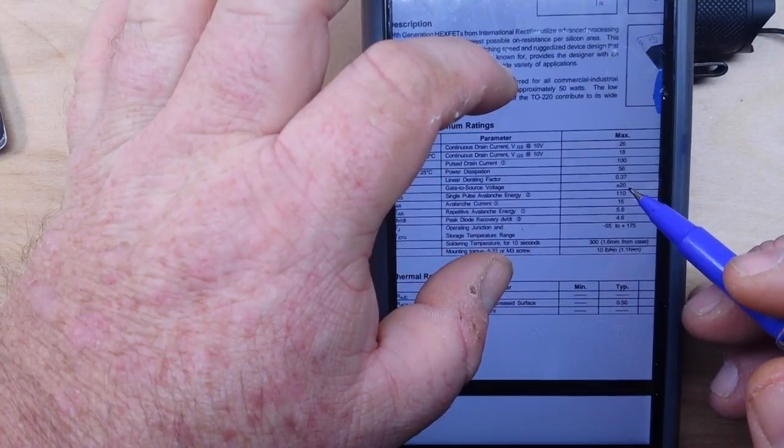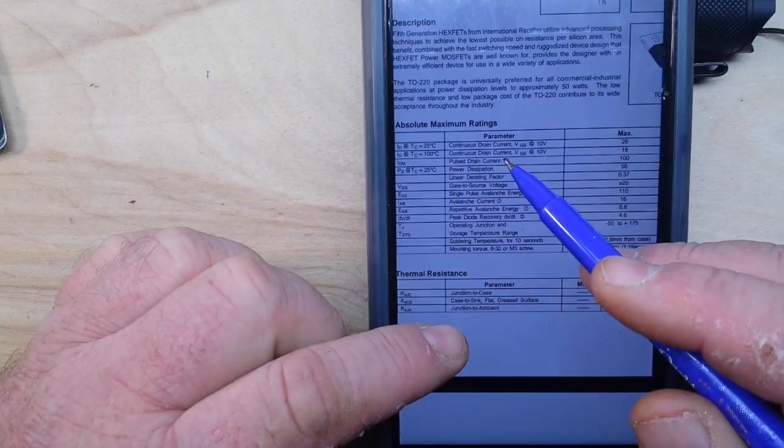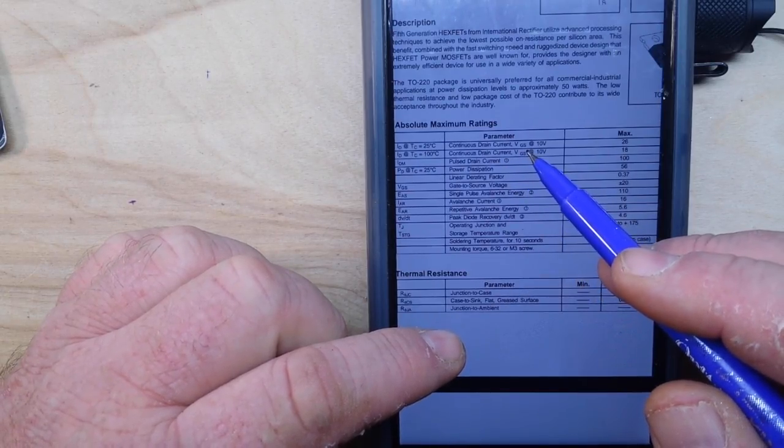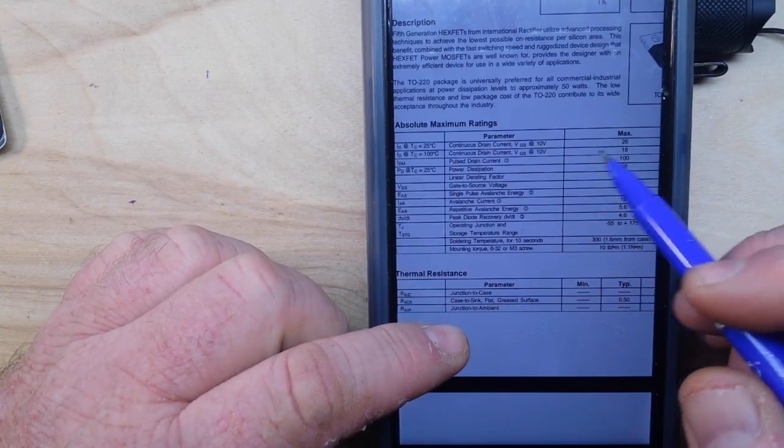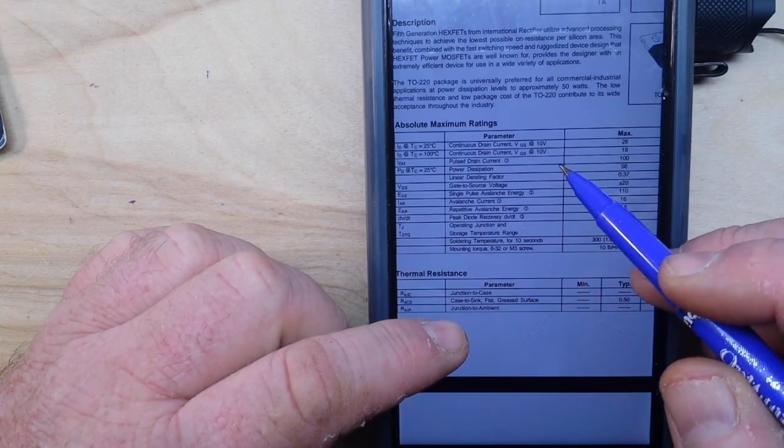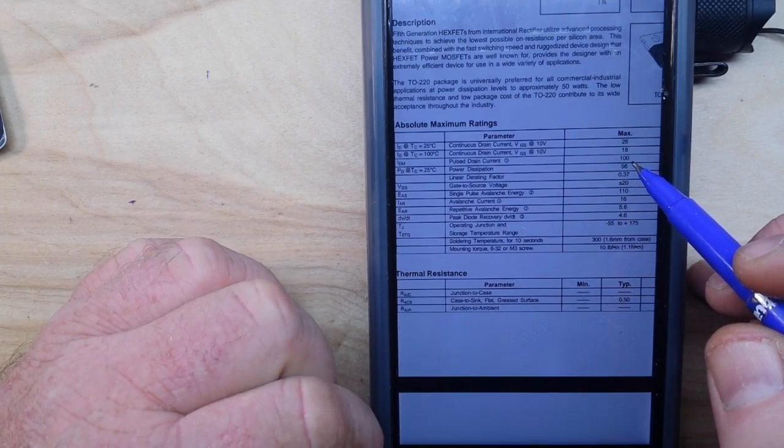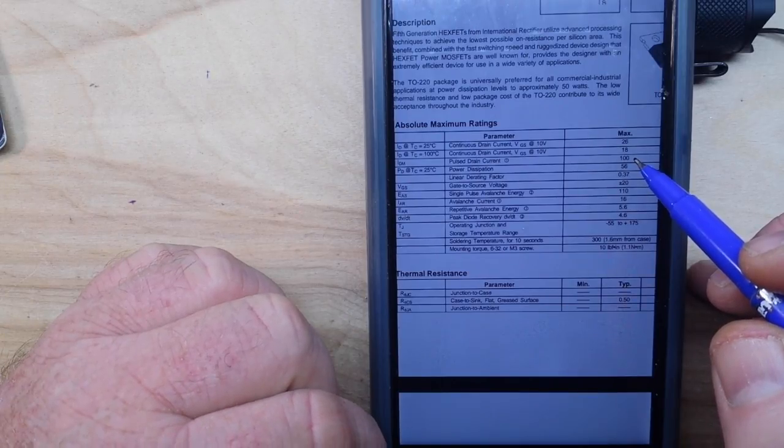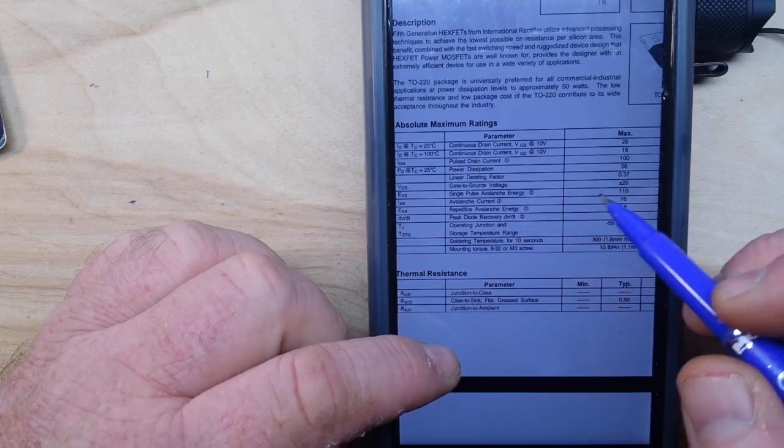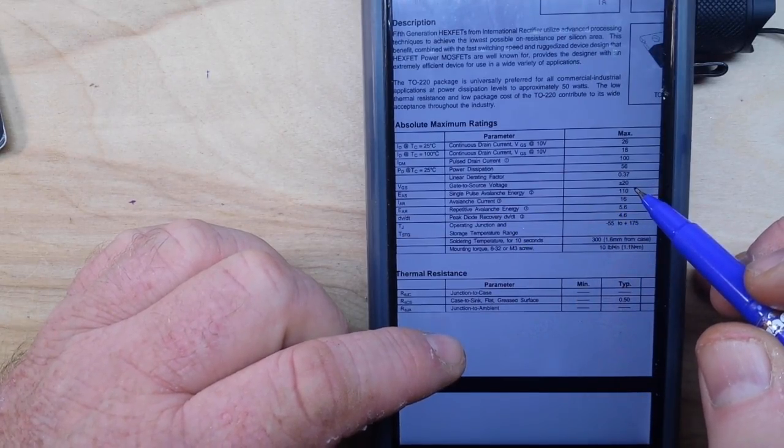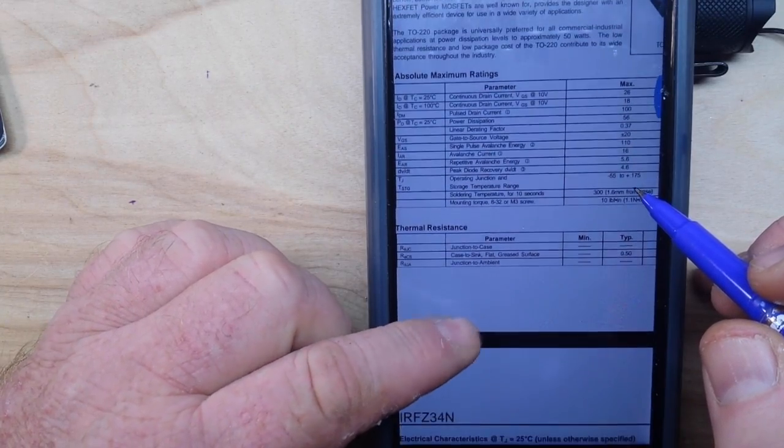Now we can come down here and take a look at our maximum ratings. And you'll see our continuous current gate to source is 26 amps. Our continuous drain current at 10 volts is 18 amps, and our pulse drain current, if we're just switching this thing on and off, we can hit it with 100 amps. That is incredible. Our VGS, our gate to source voltage, can be plus or minus 20 volts, so we can activate this with up to 20 volts. Again, incredible.